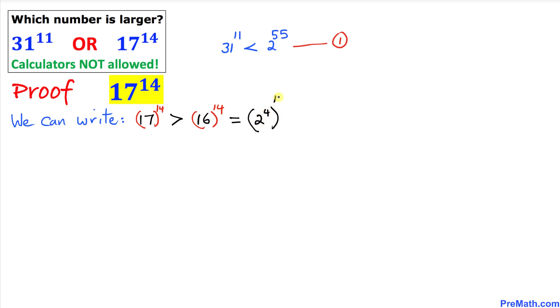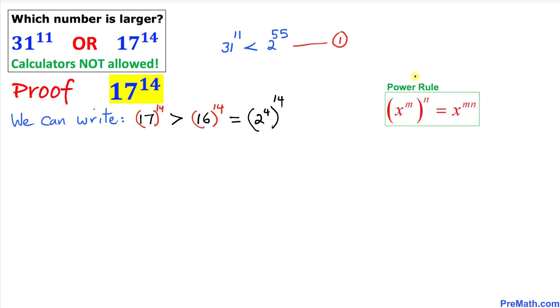And by using this power rule we can write this as 2^56, since 4 times 14 is 56. So this inequality could be written as 17^14 is greater than 2^56 according to transitive property. Let me go ahead and call this second inequality number 2.